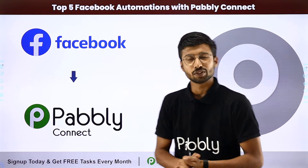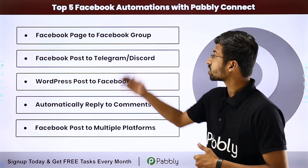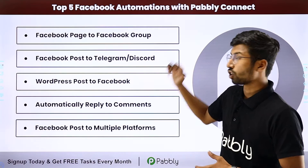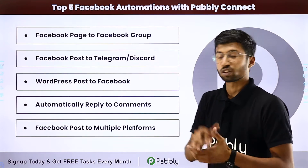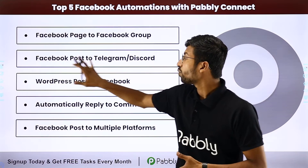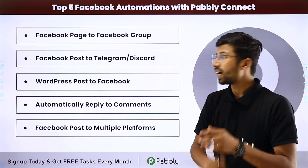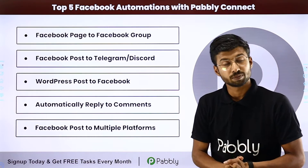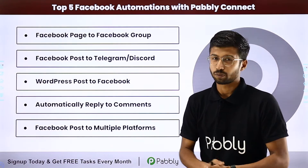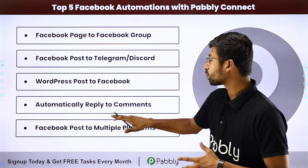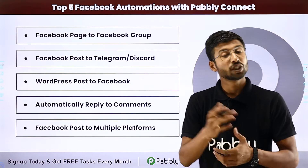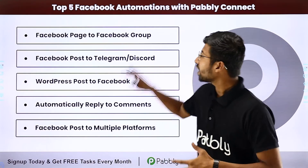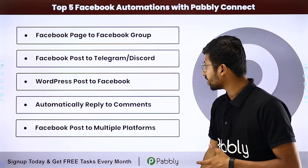So what are these automations? Let's have a look at them. These include: sharing Facebook page posts to a Facebook group, sharing Facebook posts to a Telegram channel or Discord channel, sharing WordPress posts to your Facebook page, automatically replying to comments on your Facebook page or group, and sharing Facebook posts to multiple social media platforms. Let's discuss these top 5 automations related to Facebook.